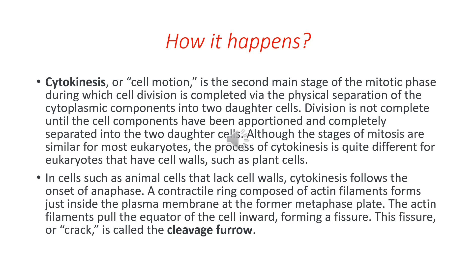In plant cells, a cell plate is formed. In animal cells, a cleavage furrow is formed — that is the only major difference. In cells such as animal cells that lack cell walls, cytokinesis follows the onset of anaphase. A contractile ring composed of actin filaments forms just inside the plasma membrane at the former metaphase plate. These actin filaments pull the equator of the cell inward, forming a fissure, and this fissure or crack is known as the cleavage furrow.